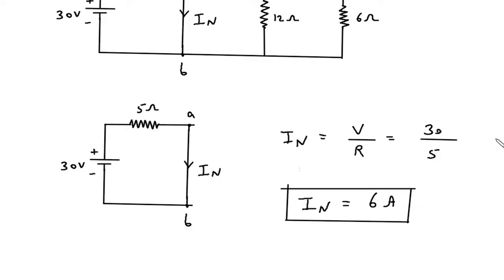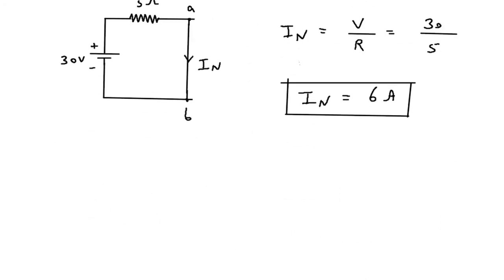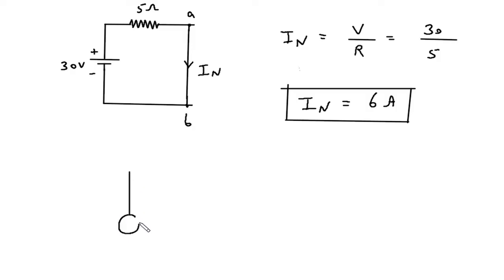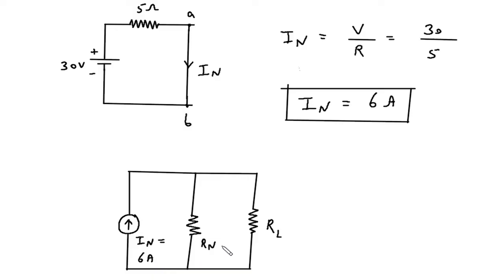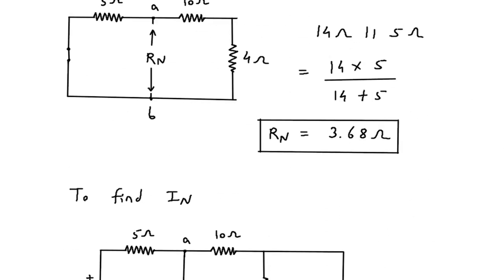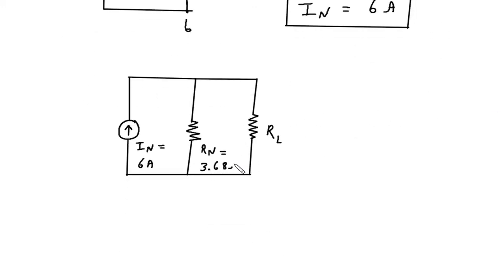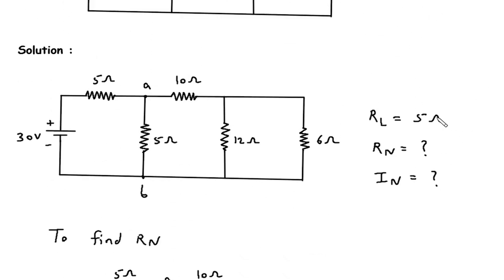Now we have the values for In, Rn, and RL. From these we can draw Norton's equivalent circuit. In the Norton's equivalent circuit, In is in parallel with Rn, and RL is connected in parallel with Rn. The value for In is 6 ampere, the value for Rn is 3.68 ohm, and the value for RL is 5 ohm.